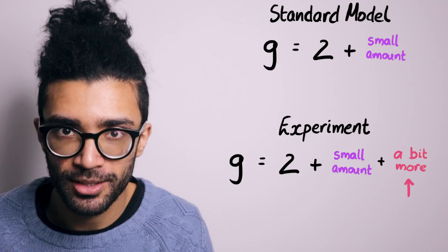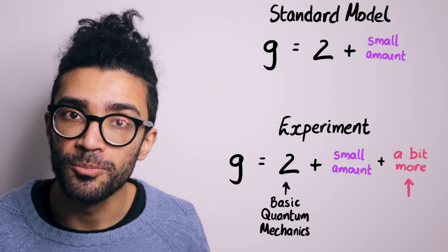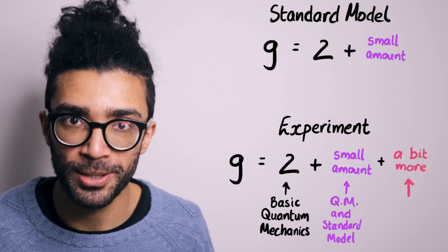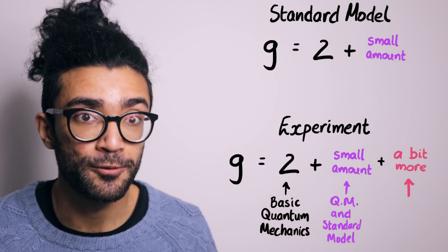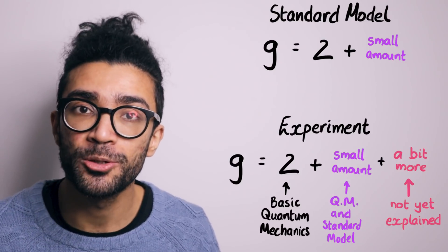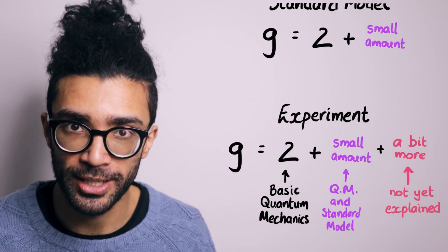We're still missing a chunk, even after accounting for everything that we know, in terms of what the value of g should be. And this is true even with our most precise theoretical calculations. They still don't account for a small chunk of the actual value of g that we observe when we do an experiment.